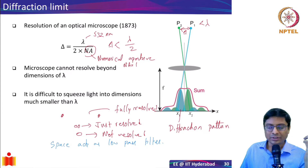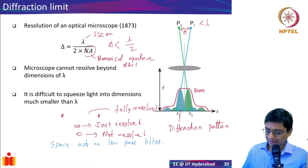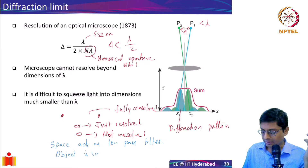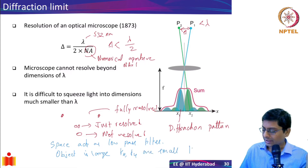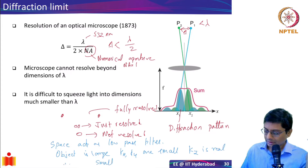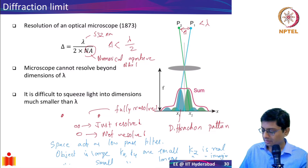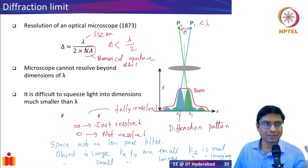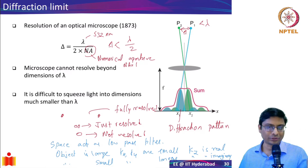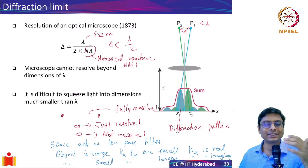When your object is very large, kx and ky are small, so kz is real. But when your object is small, kx and ky are large, and kz becomes imaginary. When kz is imaginary, as z increases the information is lost - those higher spatial frequencies are lost, and because of that you are not clearly seeing the information.